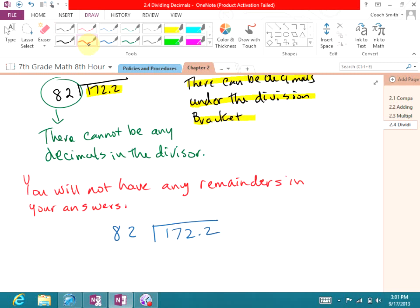These will end up finishing out terminating. You're not going to have anything like 82 remainder 14. You must carry it out all the way past the decimal. So like on this one, 82 into 172.2, there are no decimals in the divisor, so I don't have to do anything starting off. Like I said, I'll show you one of those here in a minute. But I want to divide 82 into 172. 82 goes into 172 two times.